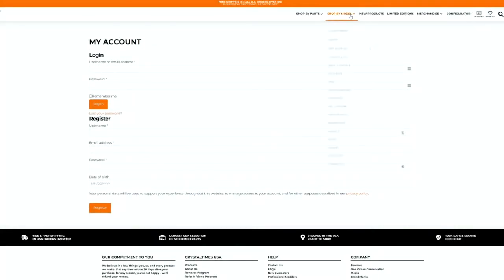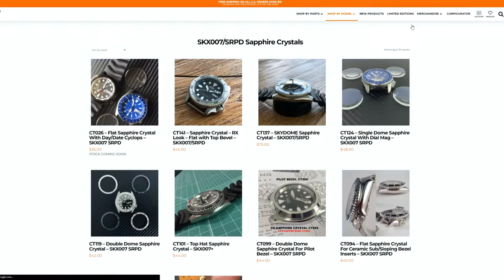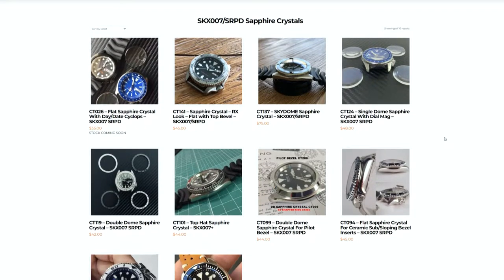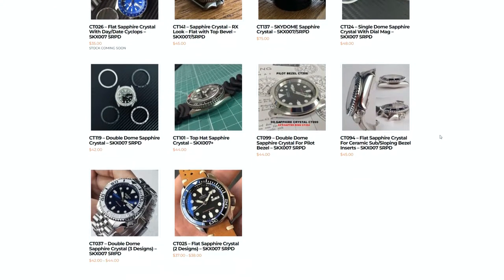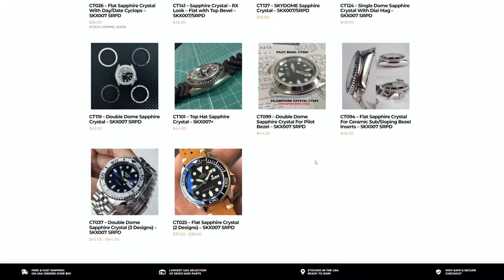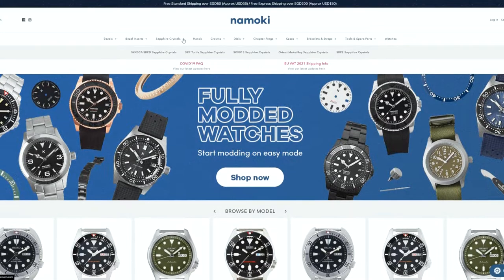Sapphire crystals are widely available and don't cost that much. I usually get my mod parts either from Crystal Times, Nomoki Mods, or DLW, but I think you can even find them on eBay and AliExpress. When purchasing a replacement sapphire crystal, you first have to make sure it's compatible with your watch. Thankfully the websites I purchase from make it easy to locate a compatible crystal.